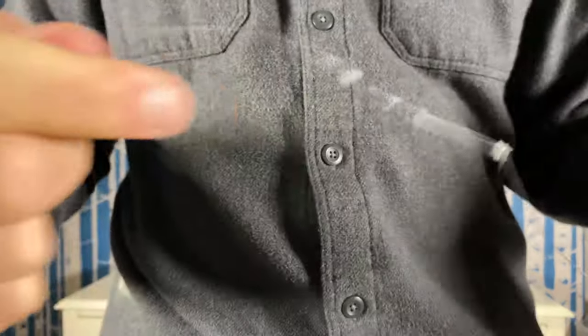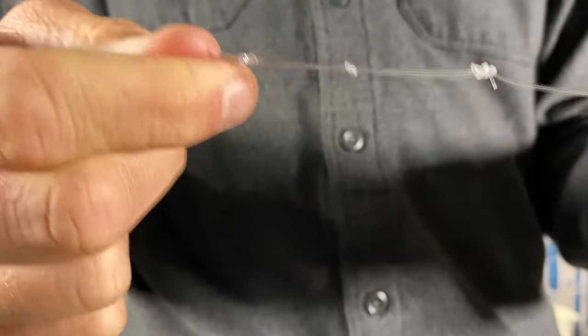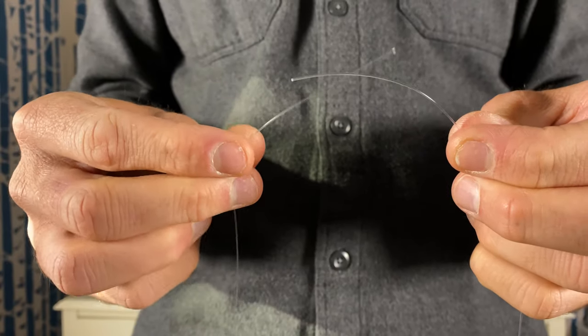If you're tying really heavy stuff to lighter stuff, that might be a little bit better because the double surgeons doesn't hold well when you're using light and heavy diameter line connected.